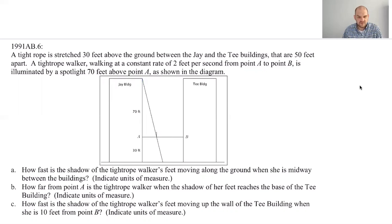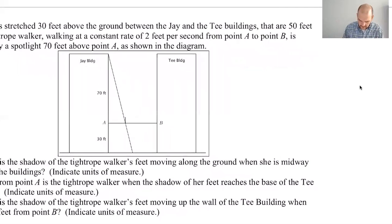How fast is the shadow of the tightrope walker's feet moving along the ground when she is midway between the buildings? This is the ground, and then this point right here is where her shadow is. The tightrope walker is walking at a constant rate of 2 feet per second from point A to B, illuminated by a spotlight 70 feet above point A. When she is halfway between the buildings, so I'm going to need a better picture.